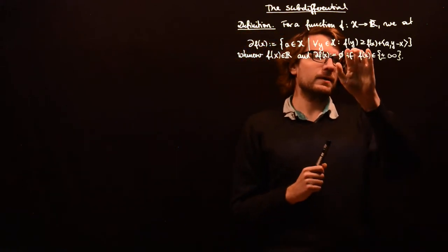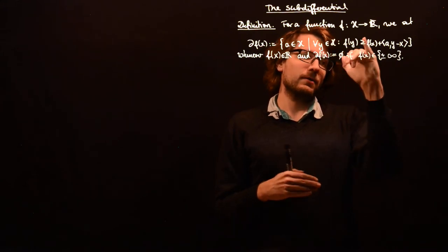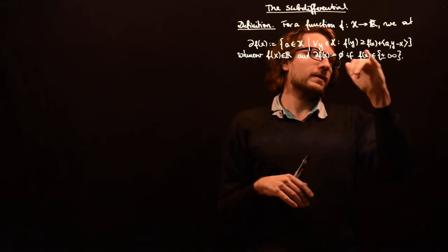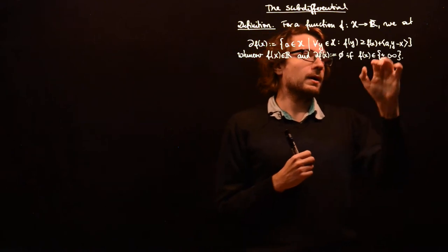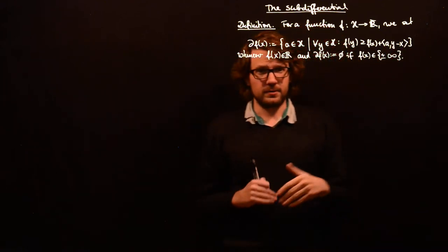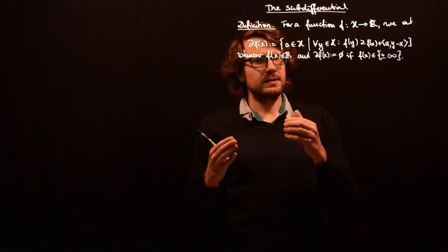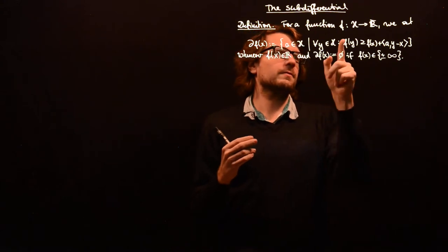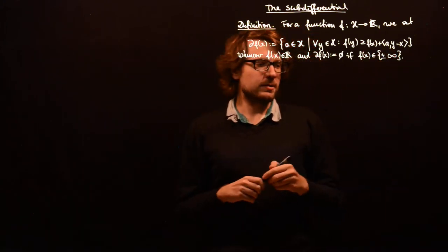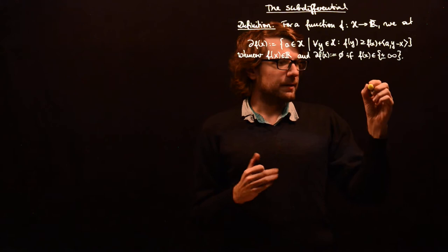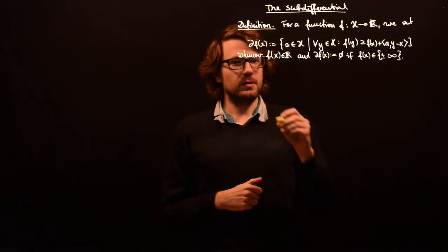So what we have here is that for all y, f of y is bounded from below by an affine function in y, where f of x plus inner product of a with minus x is the constant term, and inner product of a with y is the linear term. The inner product consists of the normal vector for certain affine minorants, where the constant term has a special form such that it will be like a tangent for the function.